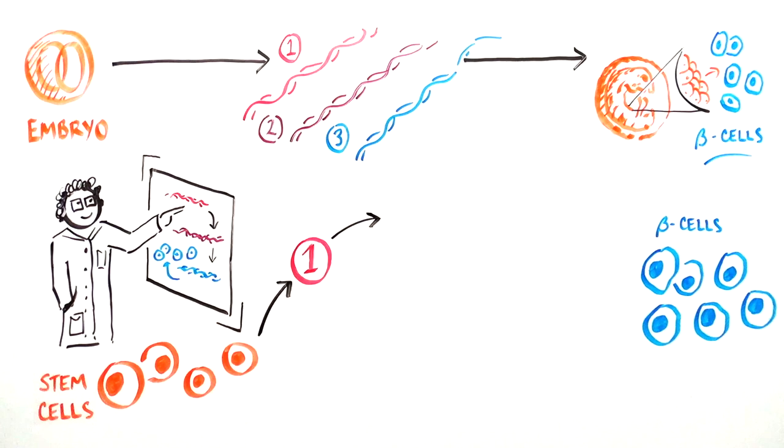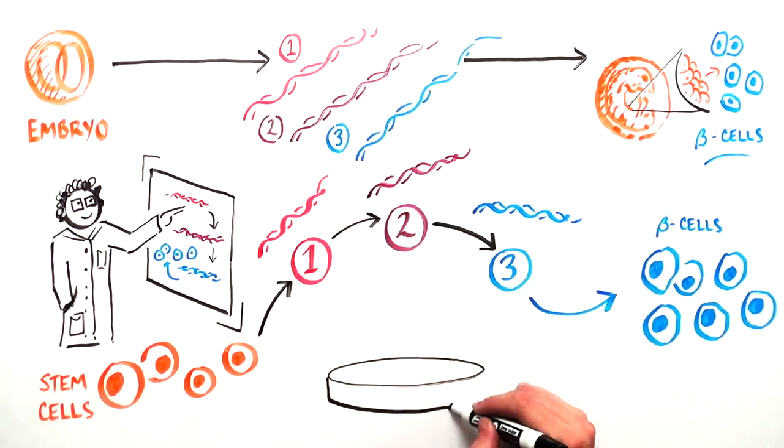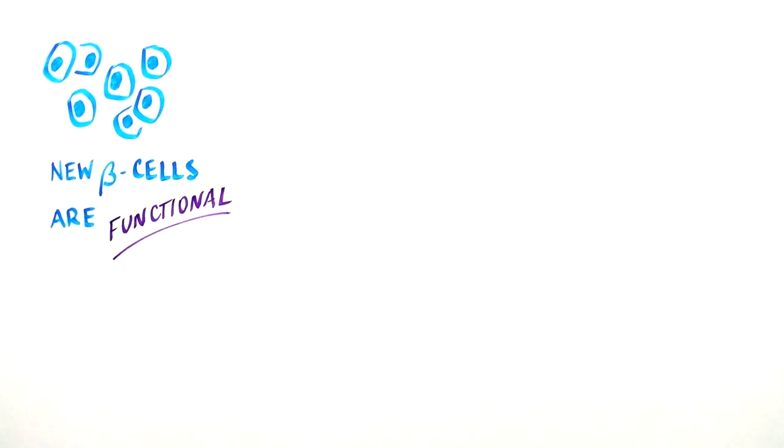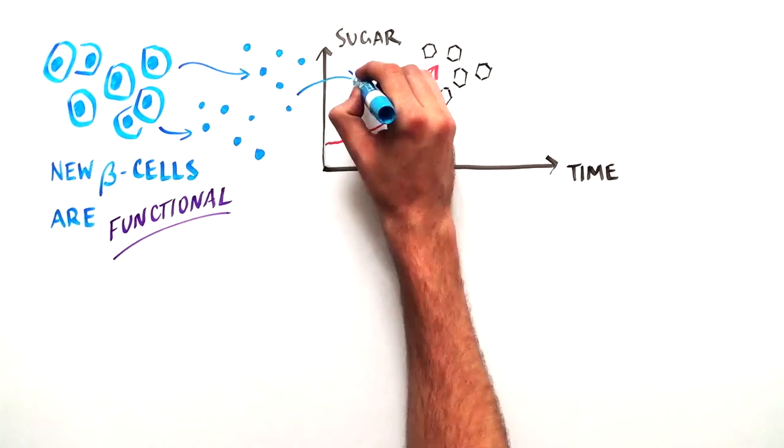By replicating exactly what happens in normal development of the embryo, scientists are creating beta cells in a petri dish. And these new beta cells are functional. They can produce insulin in response to blood sugar levels.